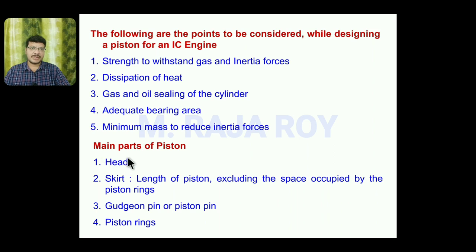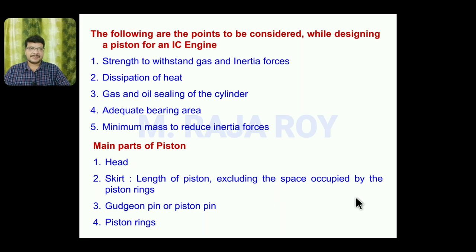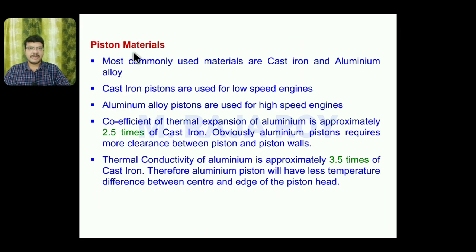The main parts of the piston are: the piston head, the skirt (which is the length of the piston excluding the space occupied by the piston rings), the gudgeon pin or piston pin, and the piston rings. Coming to piston materials, the most commonly used materials are cast iron and aluminum alloy. Cast iron pistons are used for low-speed engines, and aluminum alloy pistons are used for high-speed engines.